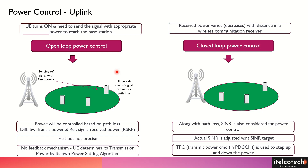Once the UE receives the reference signal, it decodes it and then measures the path loss between the base station and the user. It depends upon how far the user is — if it is closer to the base station, the path loss would be less. In this example, we are considering a user lying somewhere at the cell edge where the path loss is quite high. The UE will figure out exactly what power it has to transmit, depending upon its own ecosystem or the power setting algorithm built into the user equipment.